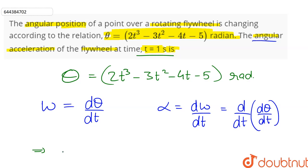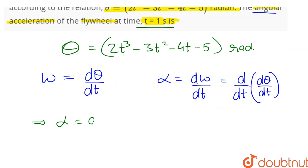Therefore, we have alpha equal to d by dt. d theta by dt will be 3 into 2t square minus 2 into 3t minus 4.